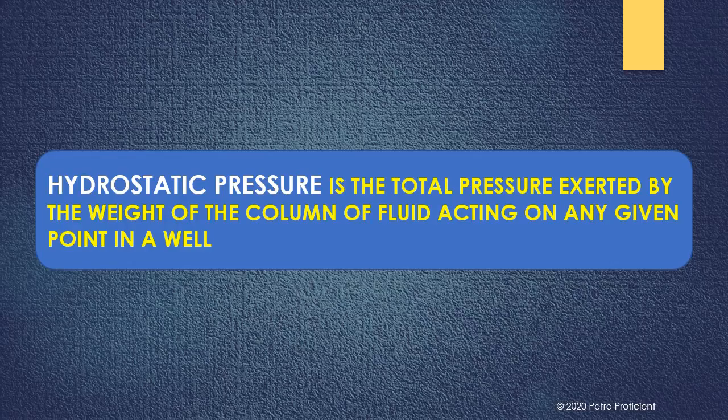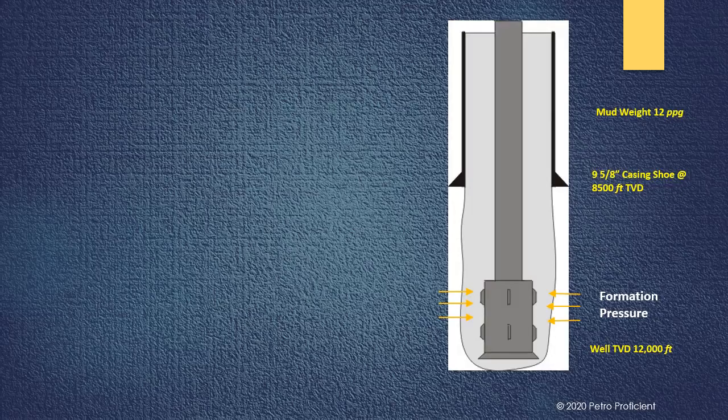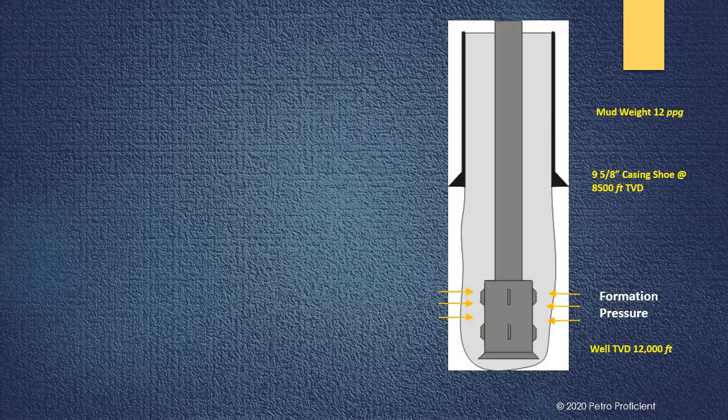Let's see an example of calculation of hydrostatic pressure. In the example we will consider a well with 12,000 feet total depth, filled with mud having 12 ppg density. TVD is the total vertical depth and is always used for the calculation of hydrostatic pressure.